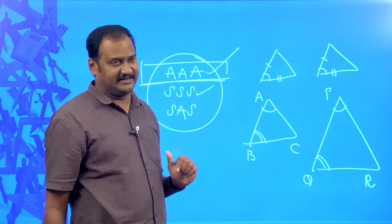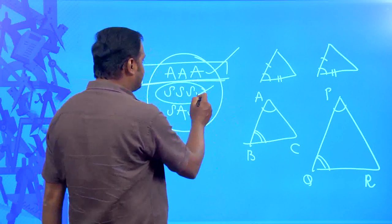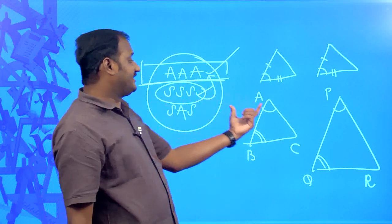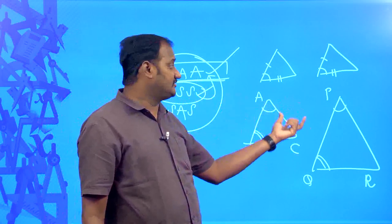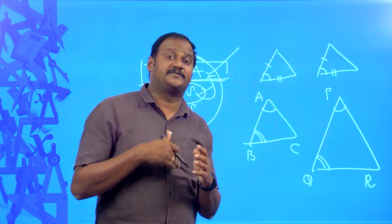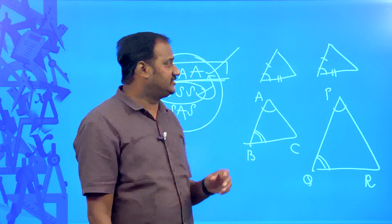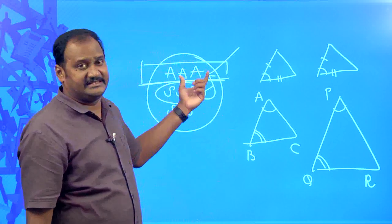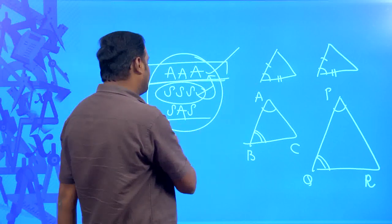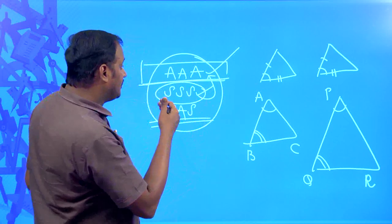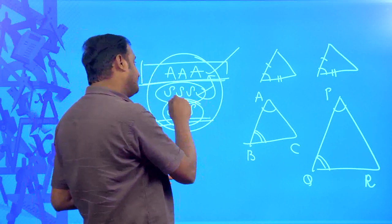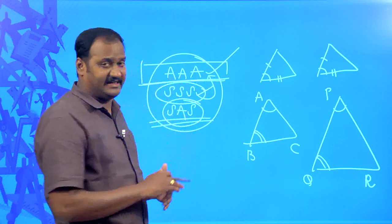Coming to SSS similarity: this is just the converse of AAA similarity. It means when the three sides of one triangle are respectively proportional to the corresponding three sides of another triangle, then they are similar — meaning their corresponding angles are equal. So the converse of AAA is SSS, and SSS implies AAA. As for SAS similarity, it is a condition derived from combining both AAA and SSS principles.